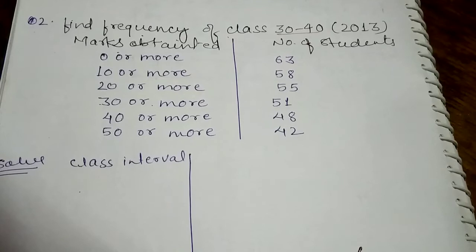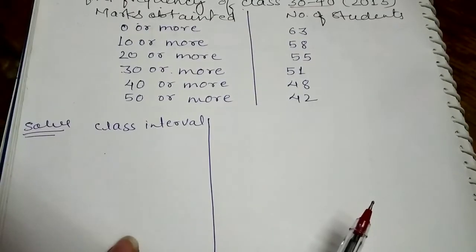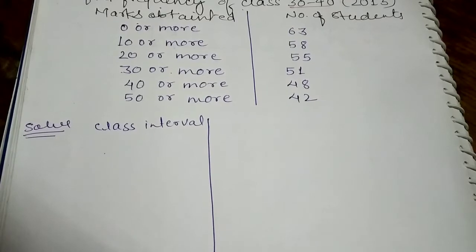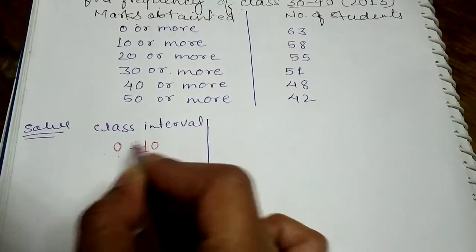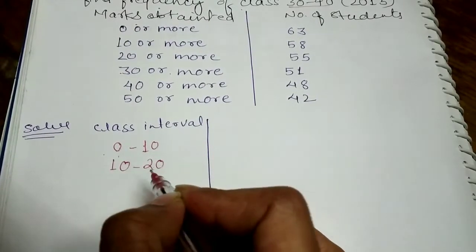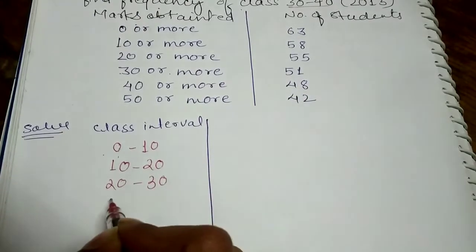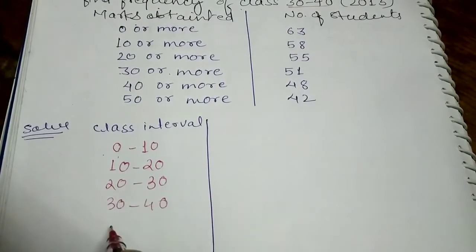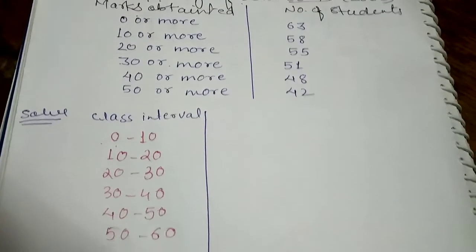First, we have to find the class intervals. We have: 0 and more (0 to 10), 10 and more (10 to 20), 20 to 30, 30 to 40, 40 to 50, and 50 to 60.